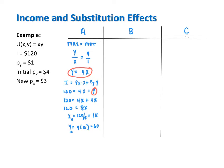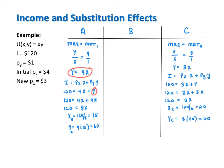To find bundle C, we use the same process as for bundle A, except now the price of X is 3 instead of 4. We set the MRS, which is still Y over X, equal to the new MRT, which is 3 over 1. Cross-multiplying and solving for Y gives Y equals 3X. Plugging Y equals 3X into the budget constraint gives 120 equals 3X plus 3X. Therefore, X at bundle C equals 20, which makes Y equal to 60.